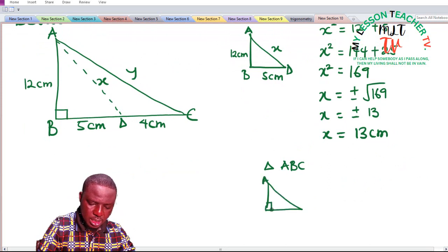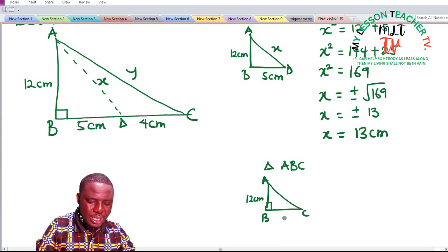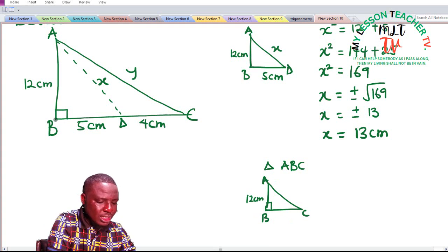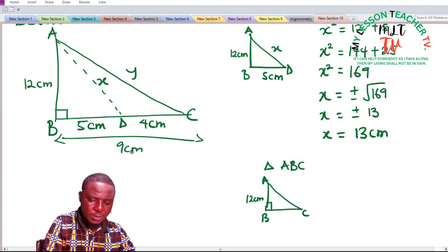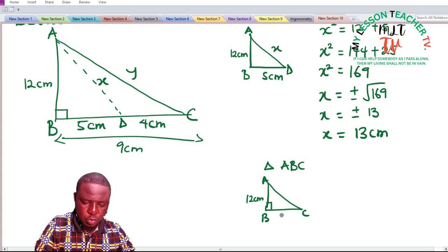This is ABC. We have this to be 12 centimeters. Now BC is said to be the distance from here to here, as against AD that is 5 centimeters. So BC is said to be the sum of 4 plus 5, which is given to be 9 centimeters. So BC is given to be 9 centimeters.